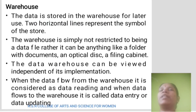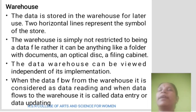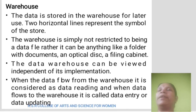The data is stored in the data store for later use. Two horizontal lines represent the symbol of a data store. The data store is not restricted to being digital — it can be anything like a folder with documents, an optical disk, or a filing cabinet. The data store can be viewed independently. When data flows from the store, it is considered data reading; when data flows into the store, it is called data entry or data updating.